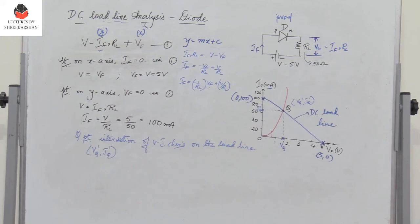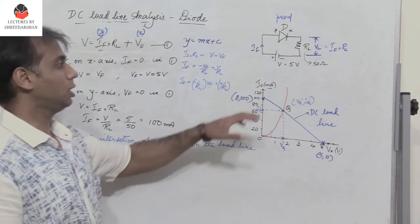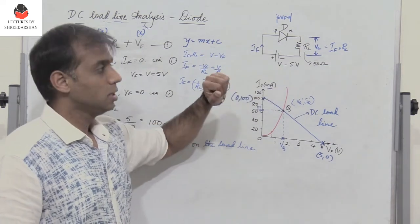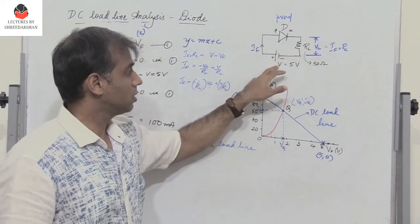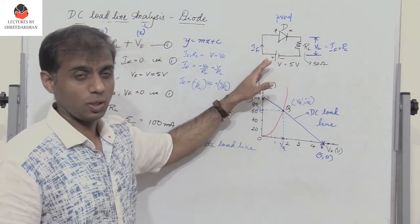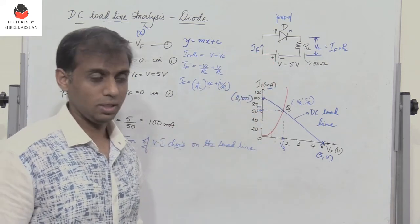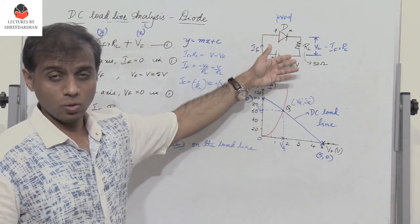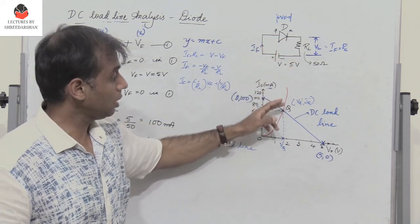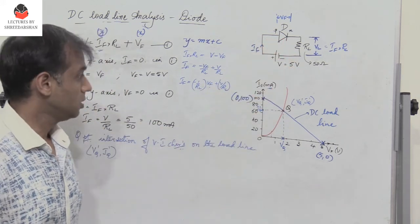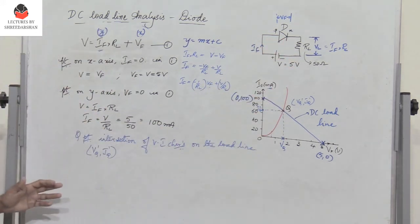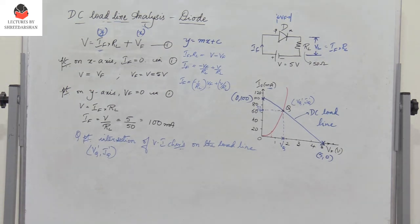The Q point depends on the load RL and also on the voltage V. If the source voltage is varied, the Q point shifts. Similarly, if the load RL is varied, the Q point will also vary. This is how we find the Q point and draw the DC load line.